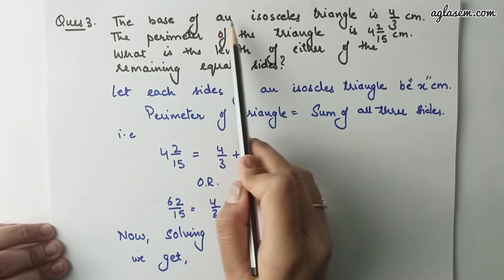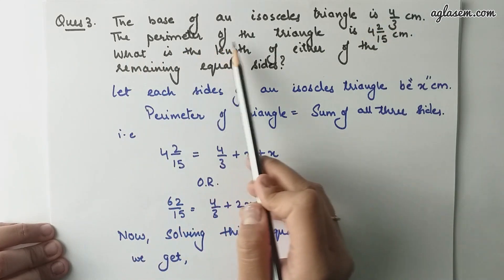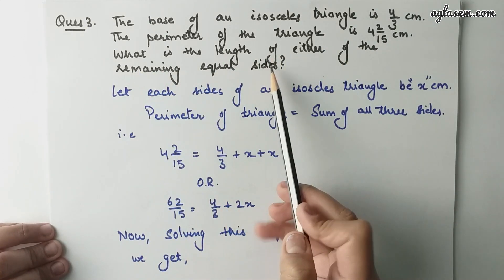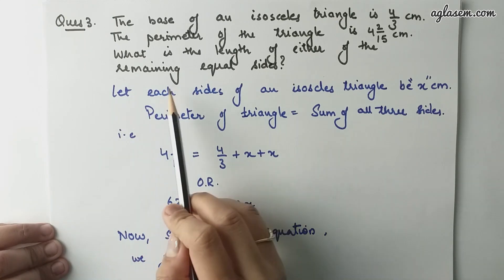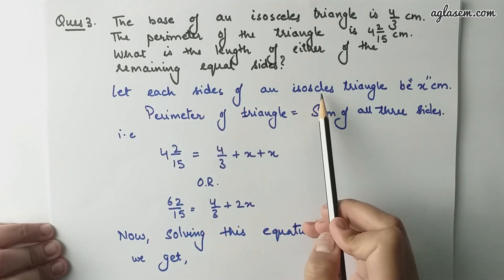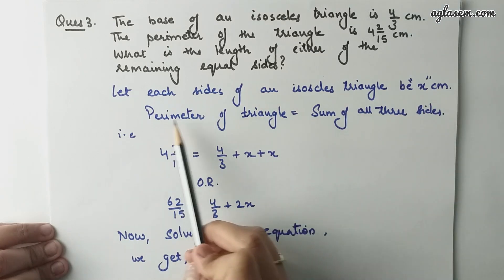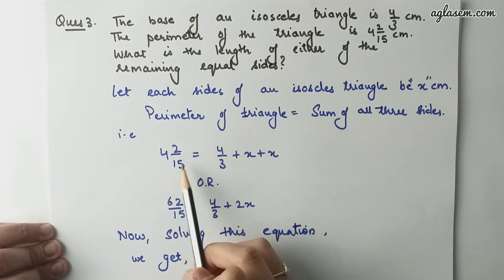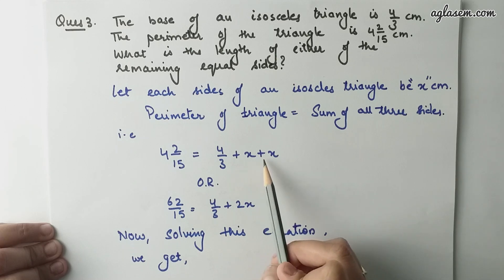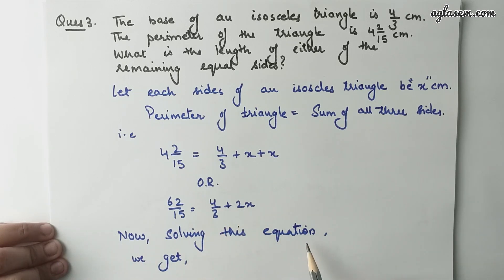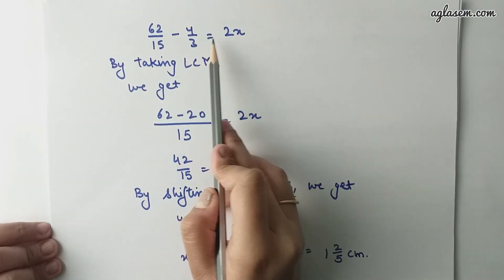Question number 3: The base of an isosceles triangle is 4 by 3 cm. The perimeter of the triangle is 62 by 15 cm. What is the length of either of the remaining equal sides? Let each equal side of the isosceles triangle be x cm. Therefore, the perimeter equals 62 by 15 equals to 4 by 3 plus x plus x, or 62 by 15 equals to 4 by 3 plus 2x. Solving, we get 62 by 15 minus 4 by 3 equals to 2x.